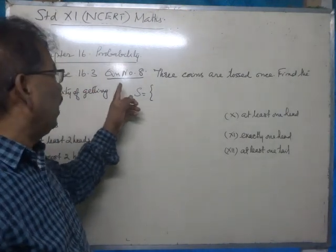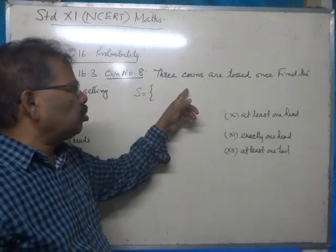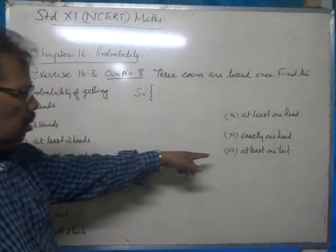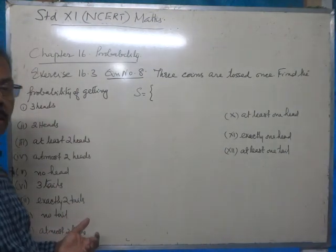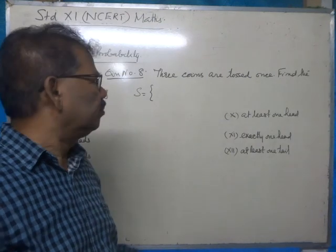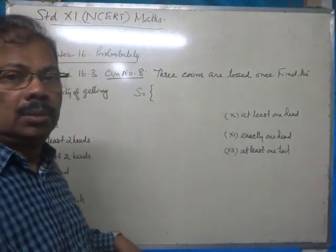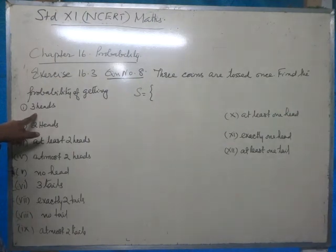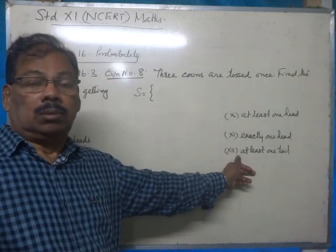We have question number 8 in exercise 16.3 in the NCERT textbook. Three coins are tossed once. We need to find the probability for 12 sub-questions and answer all of them. The random experiment is the tossing of three identical fair coins once.